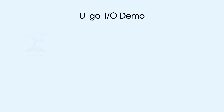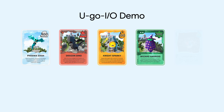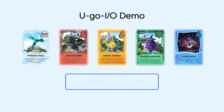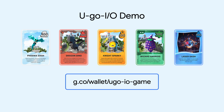If you check our Google I/O demo at the URL you see on the screen and answer the questions correctly, you'll be able to add Dash, Dino, Sparky and other characters from the IO Flip game to your Google Wallet as collectible cards.